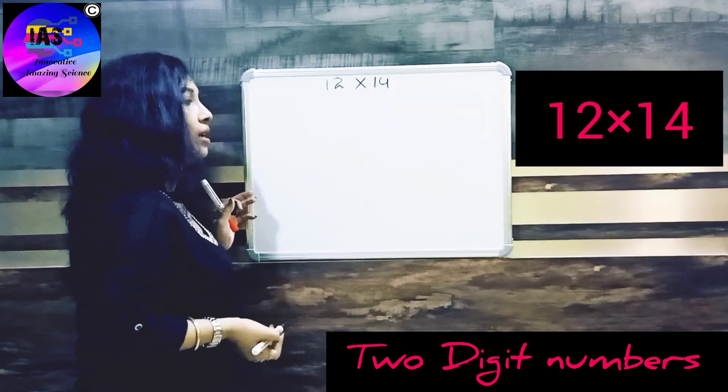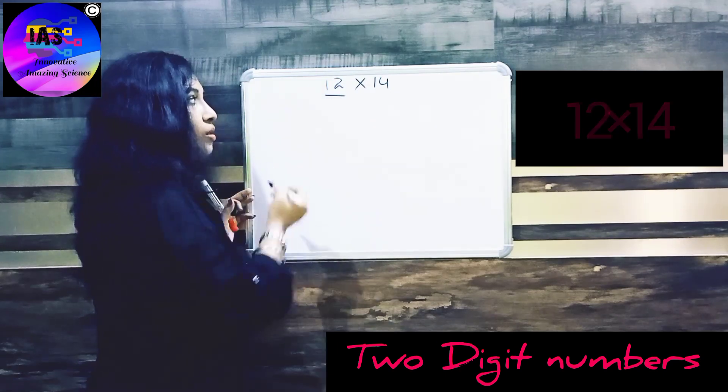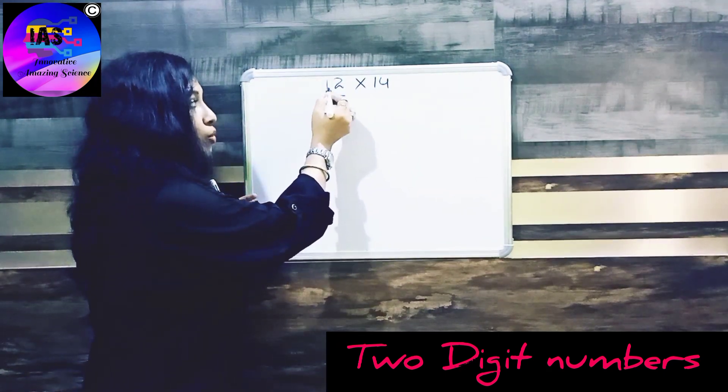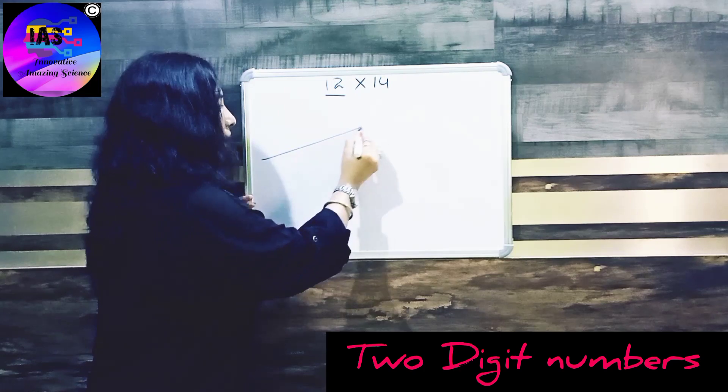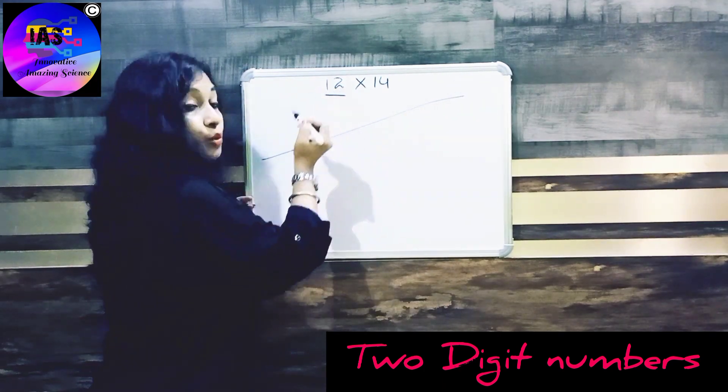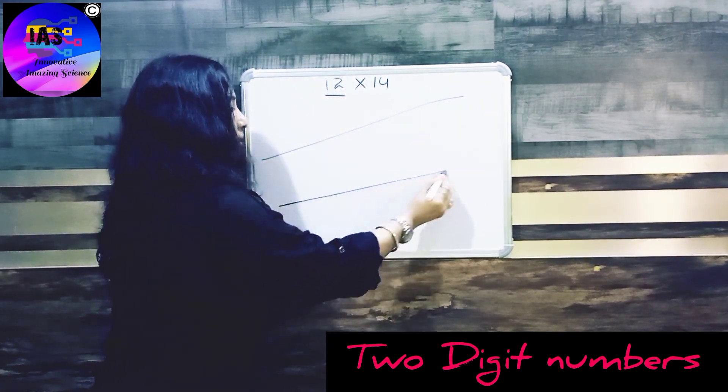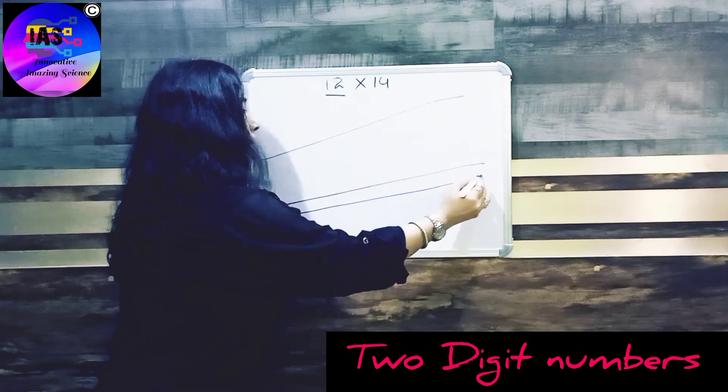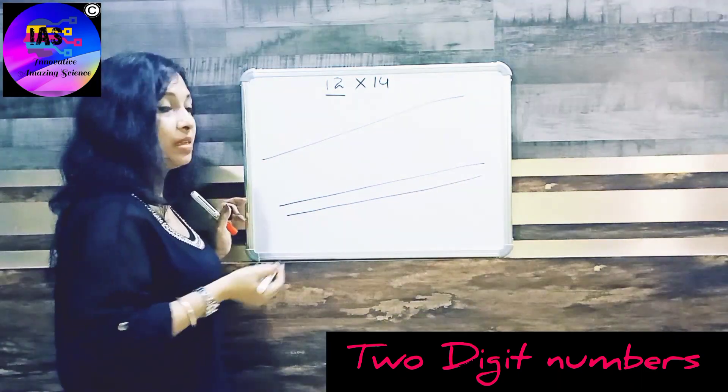So first job is to focus on 12. Here I have 1 and 2, so I'm going to draw one line. And my next number is 2, so I'll draw two lines over here.